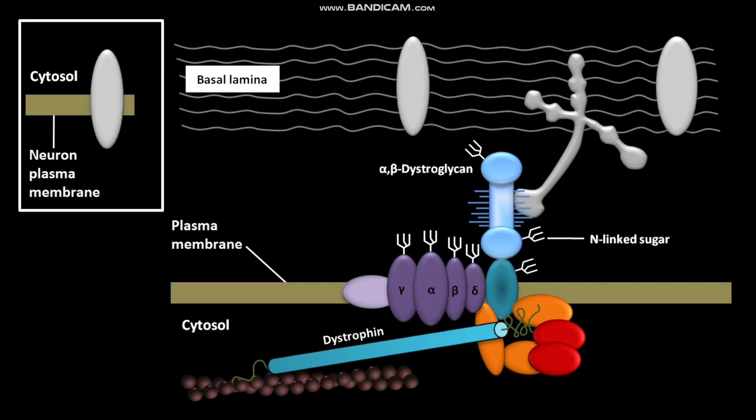Beta-dystroglycan has O-linked sugars. Through its O-linked sugars, beta-dystroglycan binds to components of the basal lamina such as laminin and perlecan, as well as cell surface proteins such as neurexin in neurons.